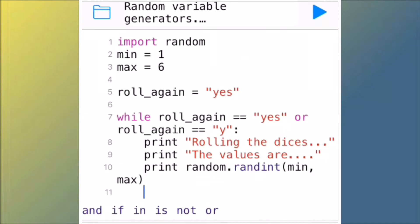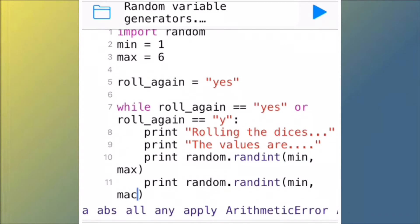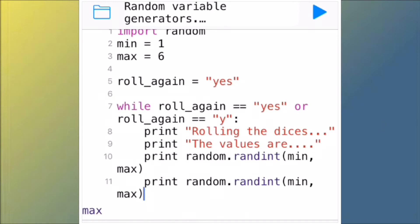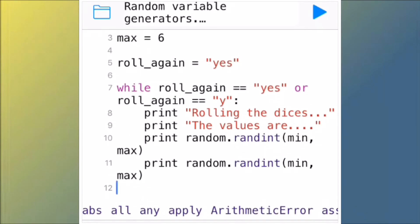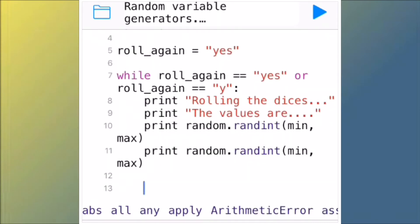Go to the next line and write that again. So print space random dot randint open bracket min comma space max, close bracket.